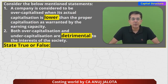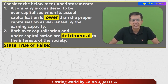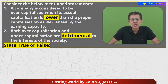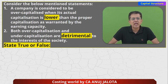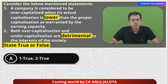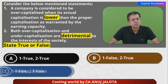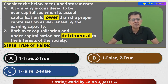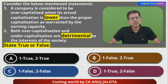Consider the below mentioned statements: Statement A — A company is considered to be over-capitalized when its actual capitalization is lower than proper capitalization as warranted by the earning capacity. Statement B — Both over-capitalization and under-capitalization are detrimental to the interest of the society. Options: (1) True, True; (2) False, True; (3) False, False; (4) True, False.